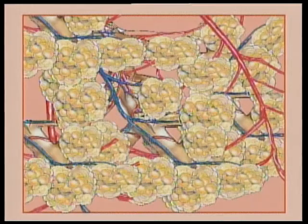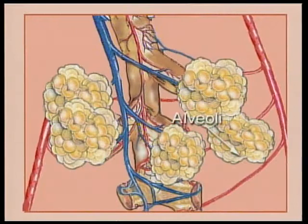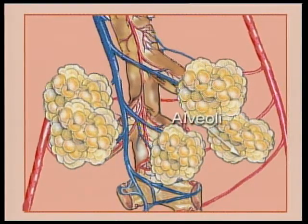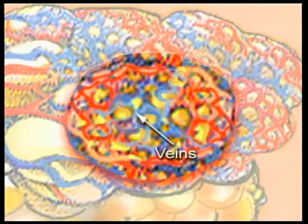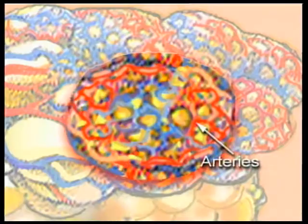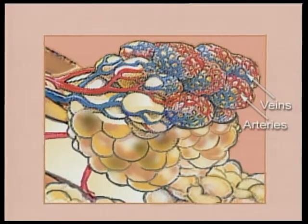There are about 300 million — that is 30 crore — alveoli in the two lungs. The alveoli are surrounded by blood vessels, both arteries and veins. The veins bring blood rich in carbon dioxide and arteries carry back blood rich in oxygen. This exchange of gases — oxygen from the air and carbon dioxide from the blood — happens at the alveoli.